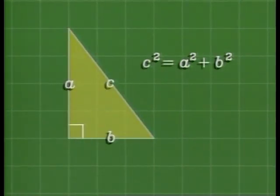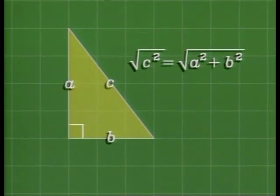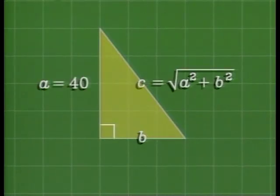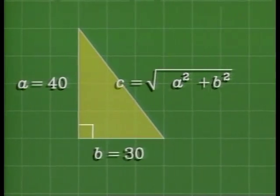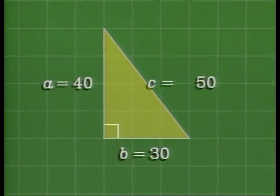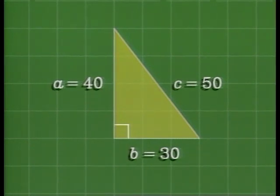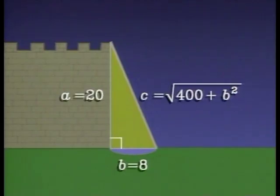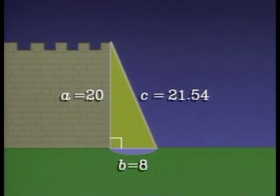Let's see how the Pythagorean theorem solves our original problems. If A and B are given and you want to find C, take the square root of both sides. For example, in the case of the jogger, if A is 40 yards and B is 30 yards, then C equals 50 yards. You save 20 yards by taking the diagonal shortcut. As for the length of the ladder, the square root of 20 squared plus 8 squared should be a little more than 21 and a half feet to reach the top of the wall.